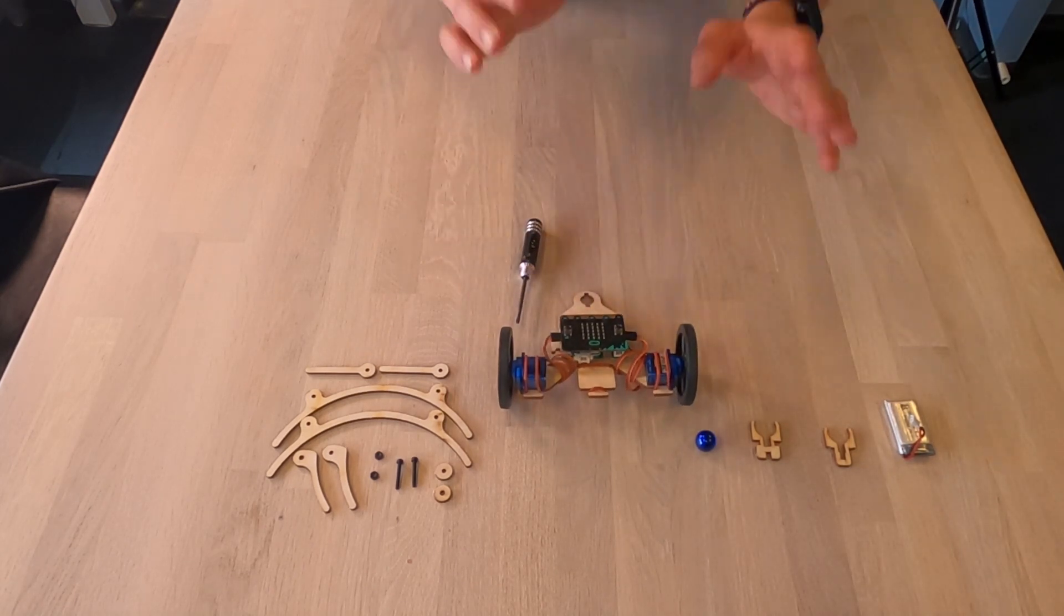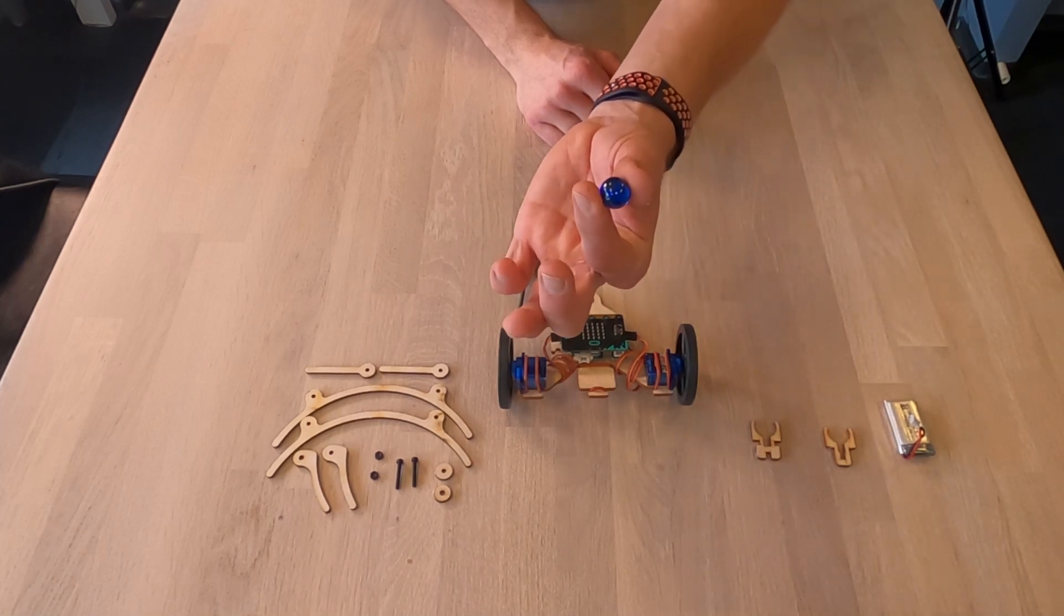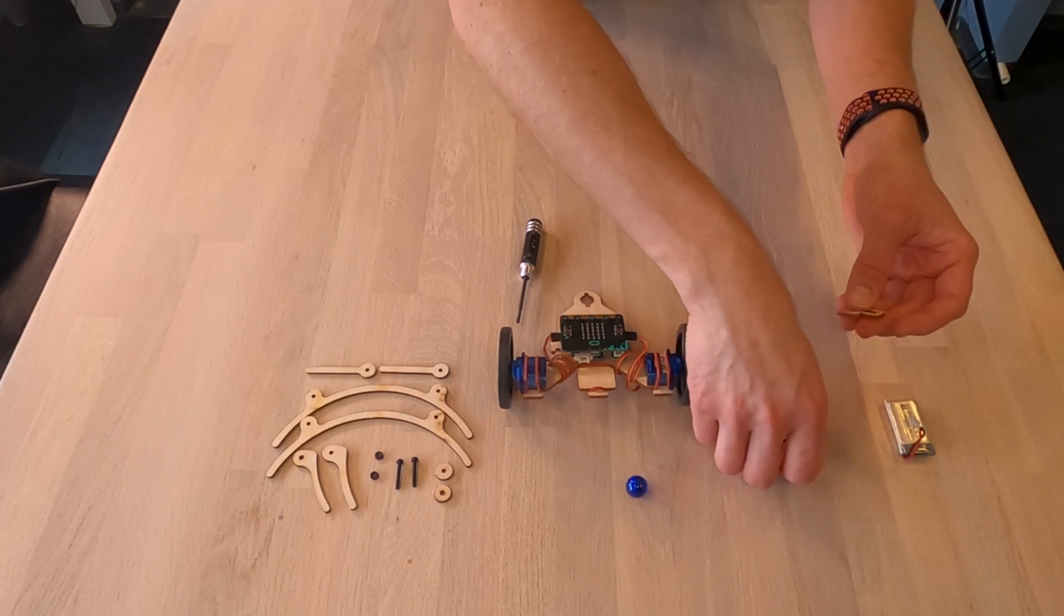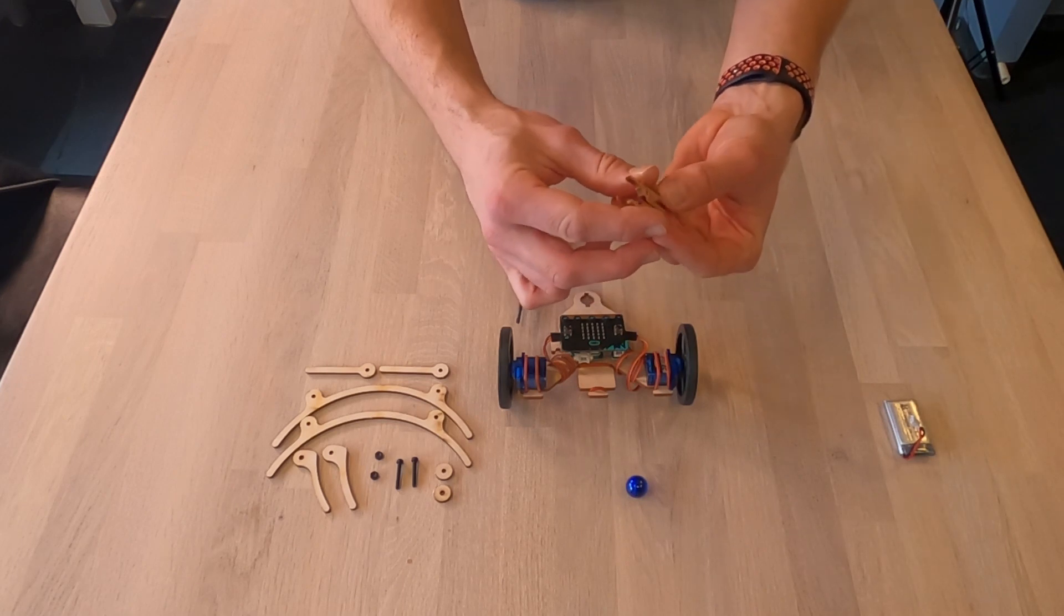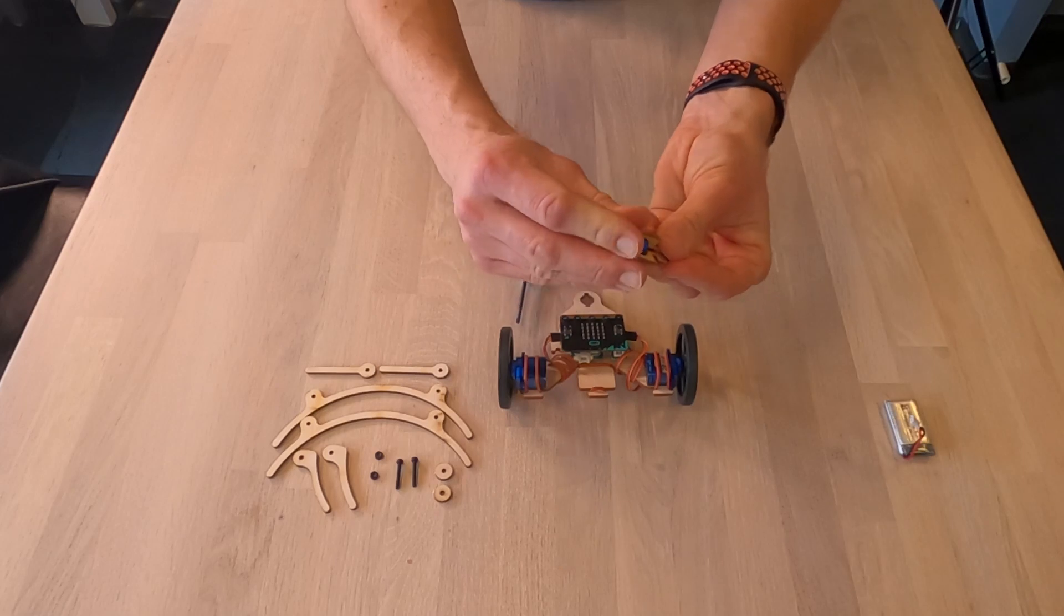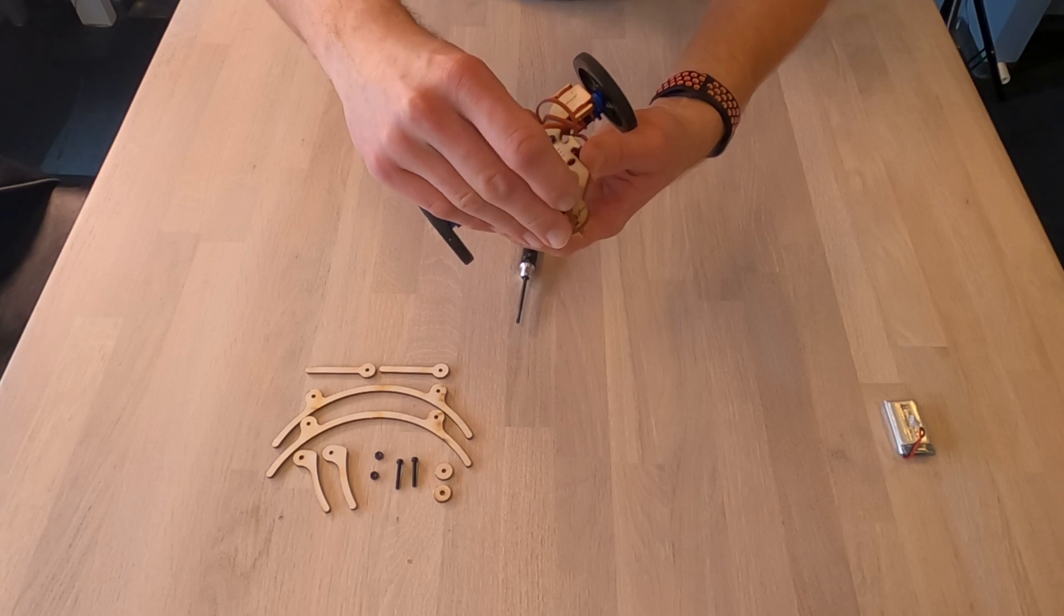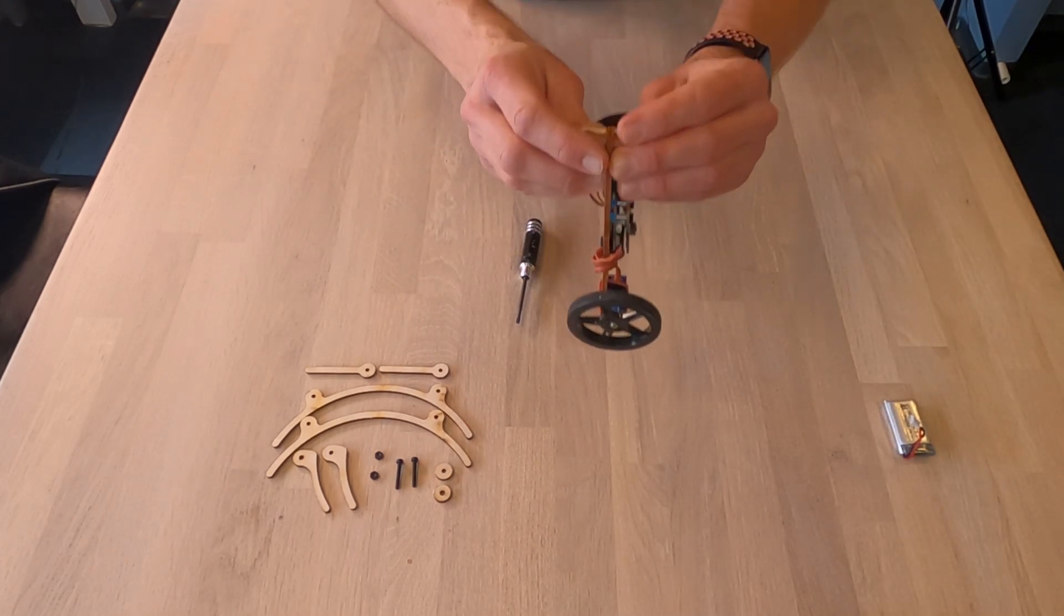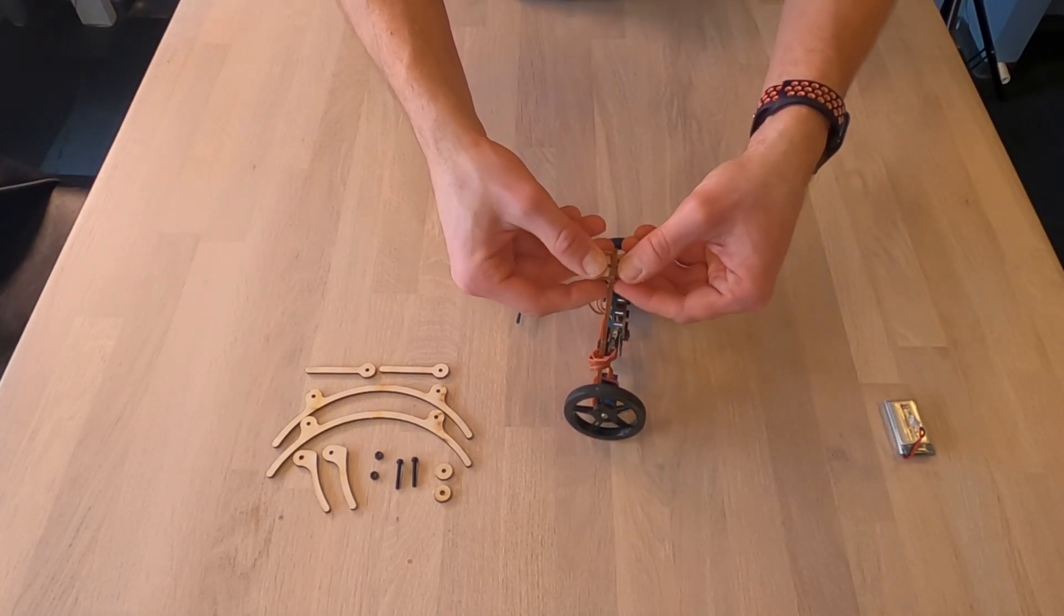Now this one is done and it's time for the marble. I'm going to take these two parts here, the marble holders. Place them together like this. Place the marble inside. Turn it upside down, push it down, and turn 90 degrees. Now when I do this, I want to have my arm here and my arm here. And turn.